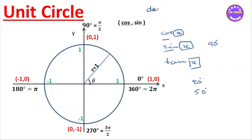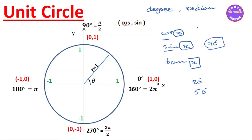We have the degree of radian — D-E-G-R-E-E, degree of radian. We have three degrees, four degrees, five degrees. In our first case, we have D-E-G-R-E. What's the degree of radian?